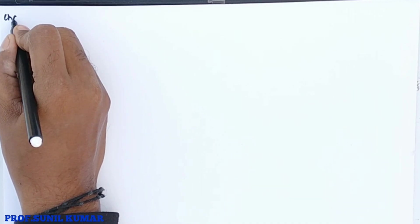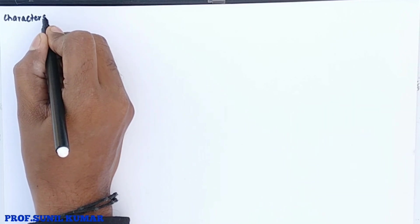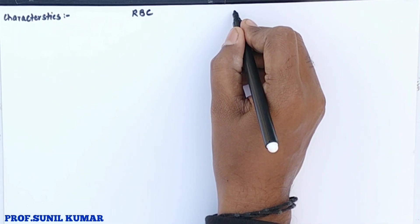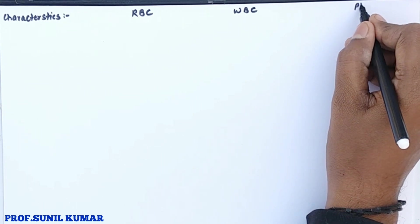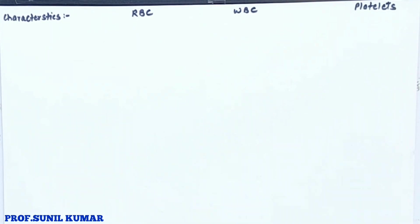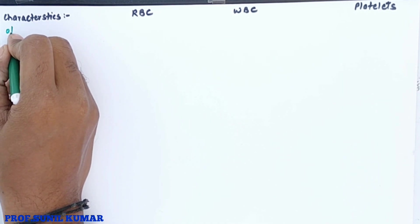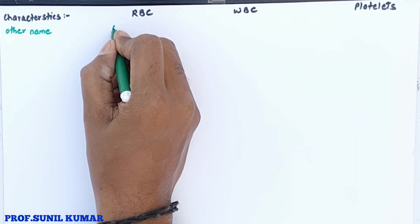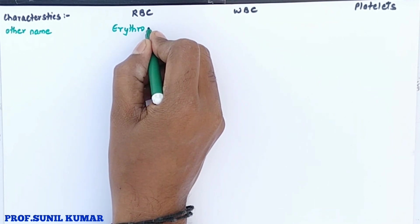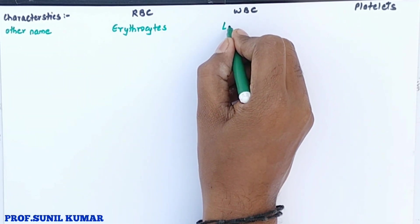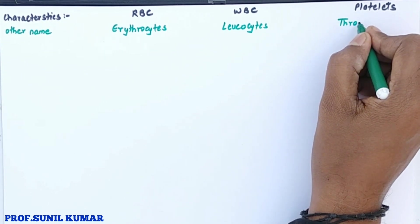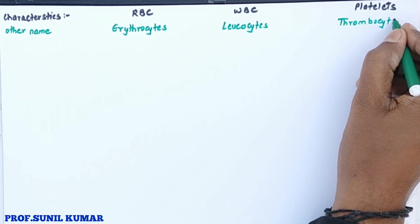The characteristics of RBC, WBC, and platelets are given in a tabular form for easy comparison. The first characteristic is the other name: RBC stands for erythrocyte — 'erythro' means red and 'cyte' means cell. WBC stands for leukocyte — 'leuko' means white. Platelet stands for thrombocyte — 'thrombo' means clot and 'cyte' means cell.